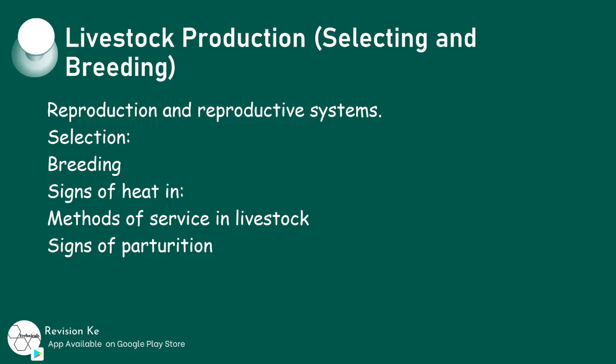Having defined reproduction, we should be able to select breeding stocks, describe breeding systems, identify signs of heat in livestock, and describe methods used in serving livestock. See you in our next class.